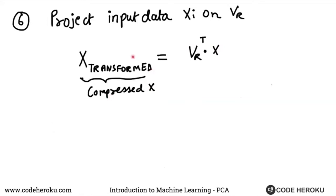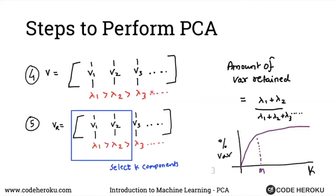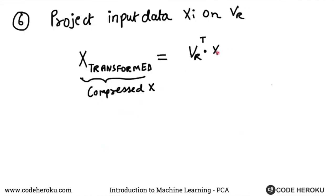We got this x transformed, or this is the PCA representation. In PCA subspace or in the PCA world, we are saying that this xi in PCA form is nothing but this vr matrix that we got from here, transpose it and multiply that with each x.